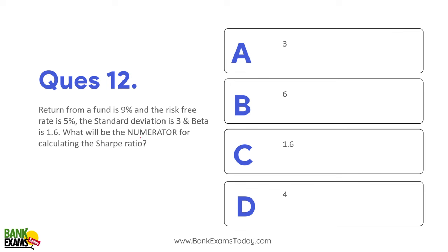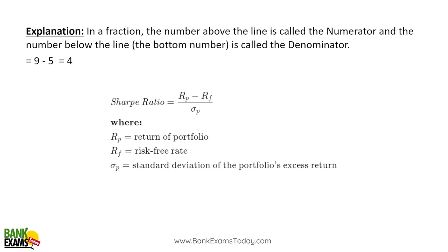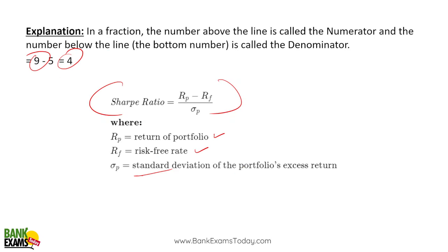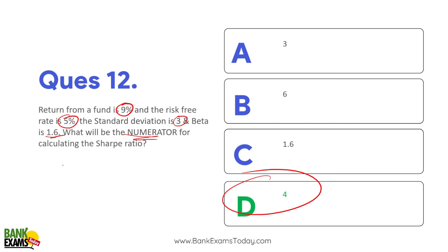Sharpe ratio question: Return from a fund is 9%, risk-free return is 5%, standard deviation is 3, beta is 1.6. You need to find the numerator of the Sharpe ratio. The formula is: (Return of portfolio minus risk-free return) divided by standard deviation. So the numerator is 9 minus 5 = 4. If you needed the full Sharpe ratio, you would divide 4 by standard deviation of 3.